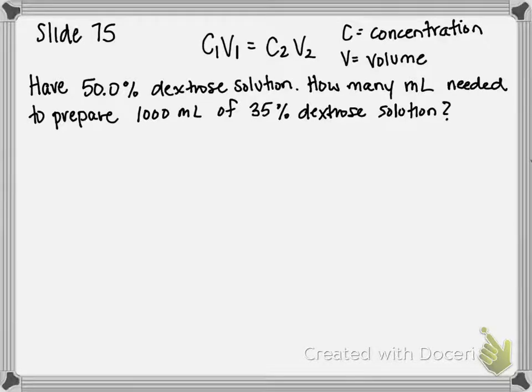This is the sample problem example on slide 75 of our chapter 12 PowerPoint. The question states: a doctor orders 1,000 milliliters of a 35% dextrose solution. If you have a 50% dextrose solution, how many milliliters would you use to prepare 1,000 milliliters of 35% dextrose?